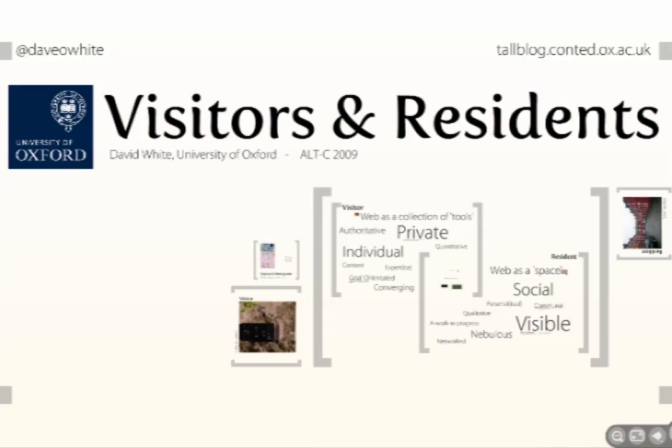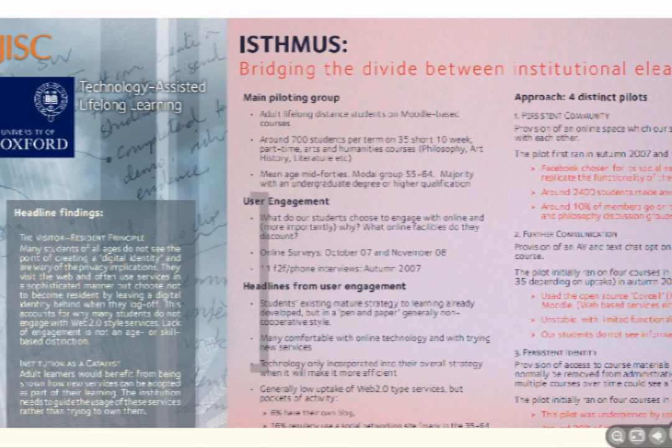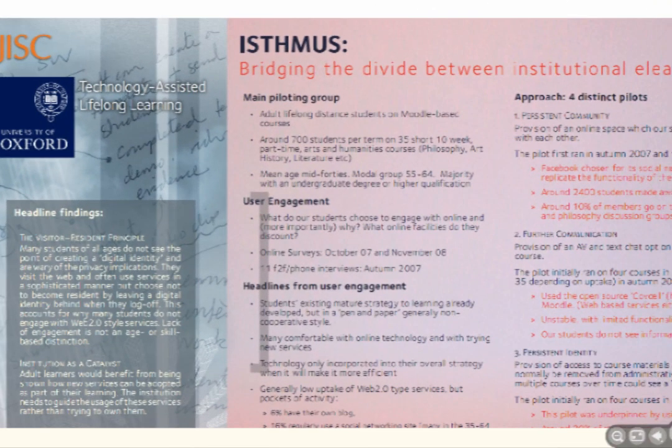The Visitors and Residents principle is a guide to assessing people's motivation towards the web. The principle came out of work we were doing on a JISC-funded project called ISMUS, where we were looking at the institutional provision of e-learning and the culture of the wider web, trying to bridge that divide because the culture of the wider web had changed significantly with the emergence of social media over the preceding five years or so.